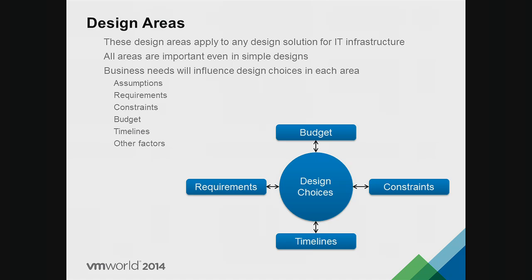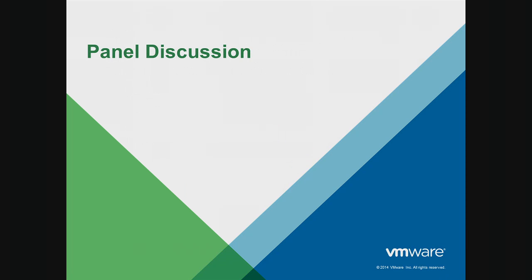Looking at the different design areas: we have assumptions, requirements, constraints, budget, timelines, and other factors that may drive a design solution. The idea is that every decision you make can affect other areas of the design. Choosing one technology might reduce cost but increase something else — there are positive and negative effects, sometimes double positives or double negatives. We want to go into the panel discussion now, using this framework as background to avoid common questions on architecture design from the VCDX perspective.